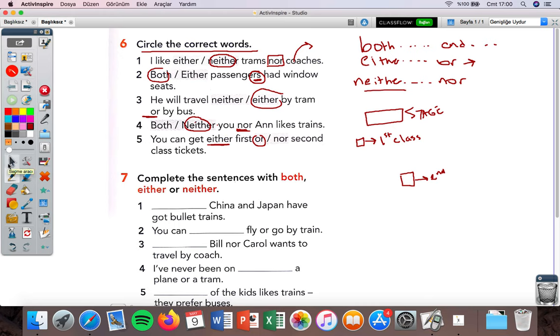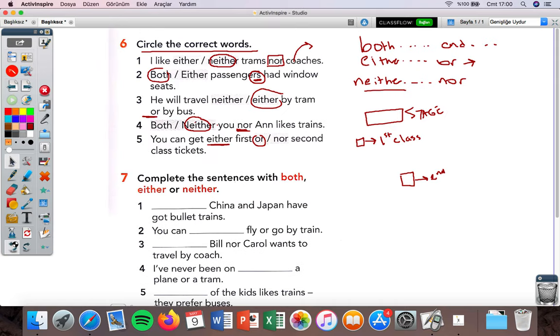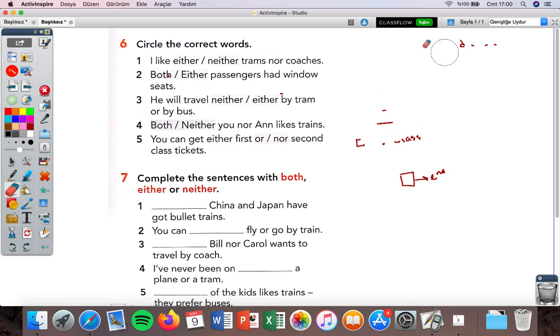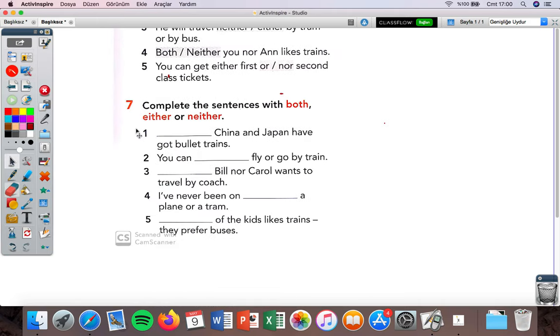Now exercise 7. I'm going to put it here. Oops, sorry. What should I do? I think I have to clean the whole screen so that's the only way that I can move the exercise. Okay, now both, either, and neither again.